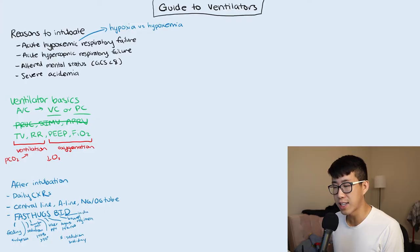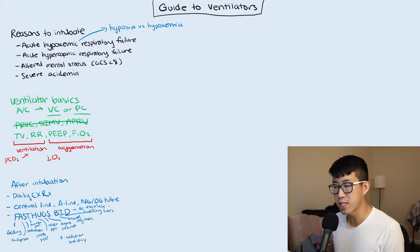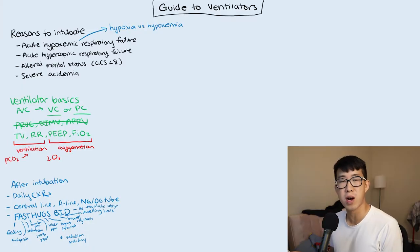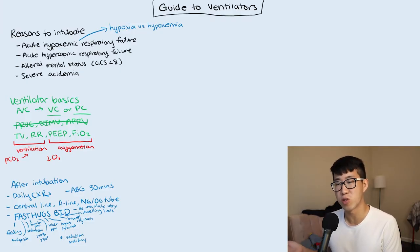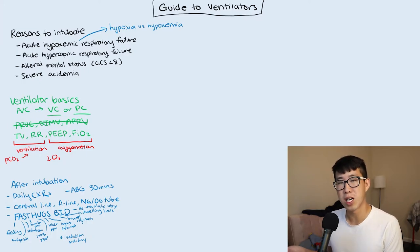I is for indwelling lines — assess daily whether the patient still needs their central lines, A-lines, etc. D is for de-escalate, meaning de-escalate antibiotics as soon as possible. Also, any time you make a change to the ventilator or change the patient from supine to prone or vice versa, you should get an ABG 30 minutes to an hour afterwards to see how it affected their blood gases.